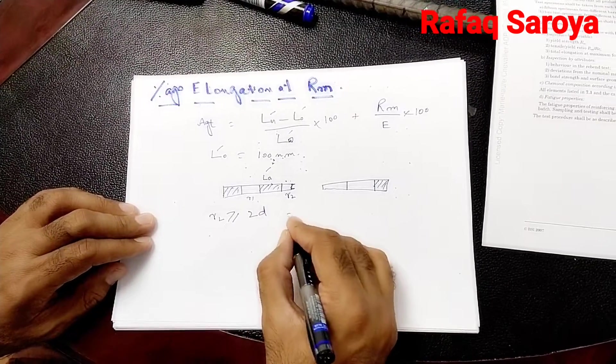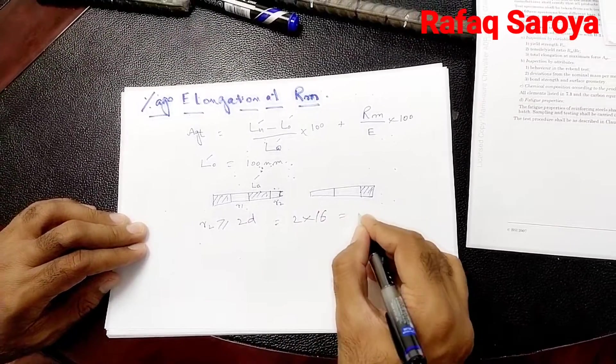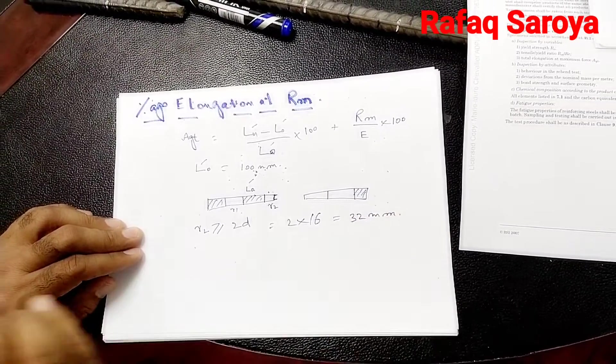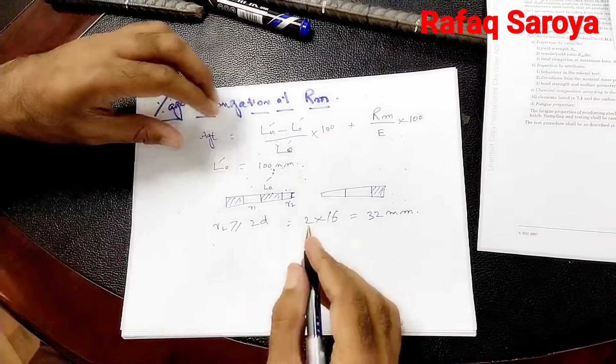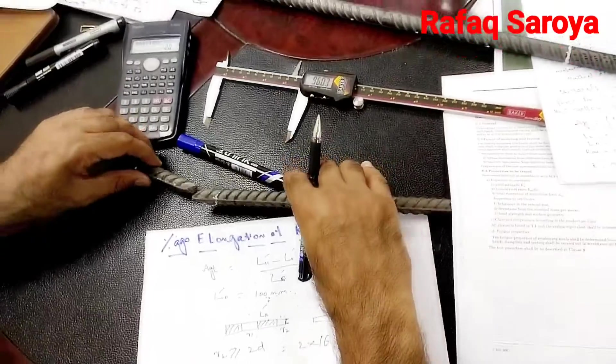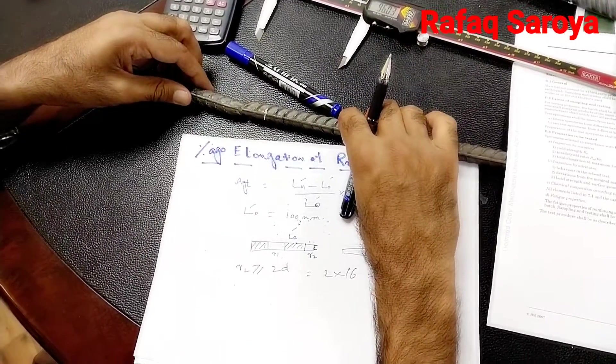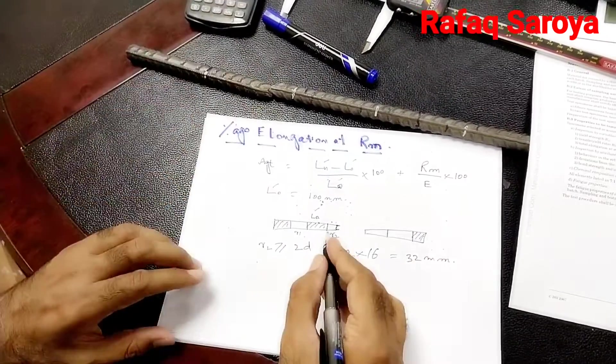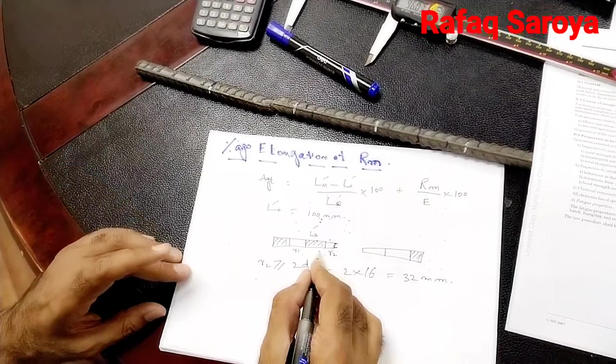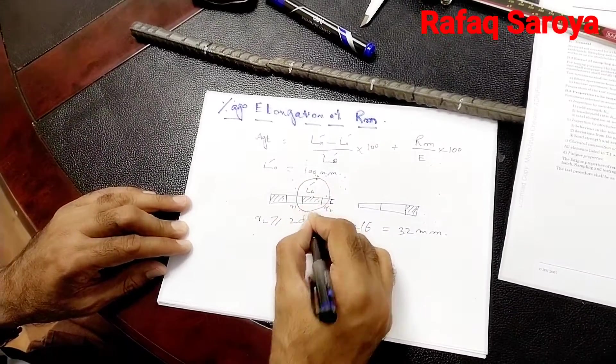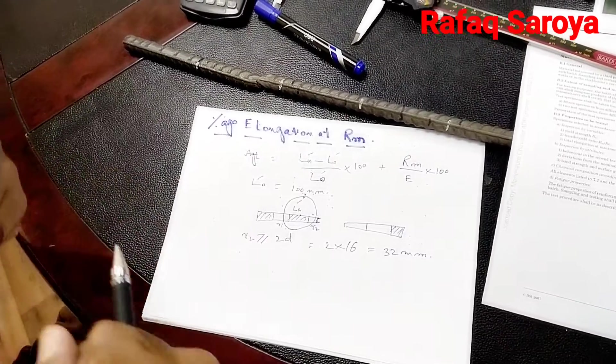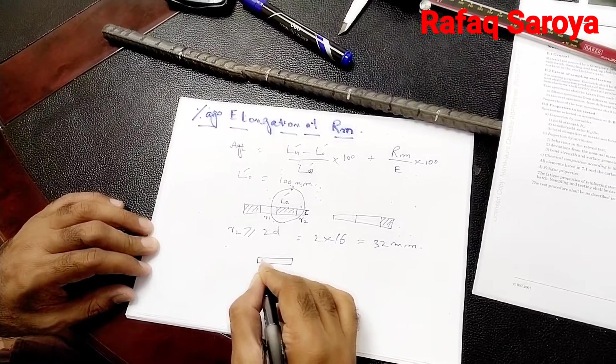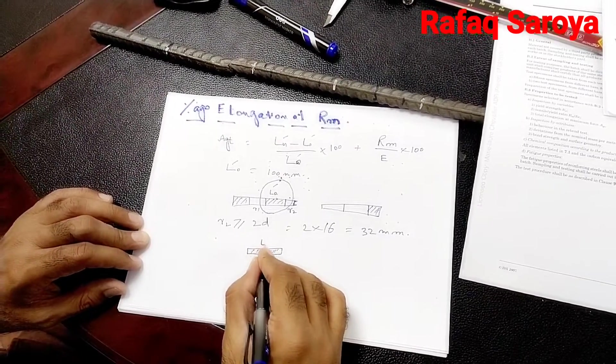It means 2 into 16 is equal to 32 mm. So this distance, as it has got ruptured, is more than 32 mm. Now the distance on the left hand side will be taken into consideration, and because there is some stretch after being stretched, this distance is converted into LU'.